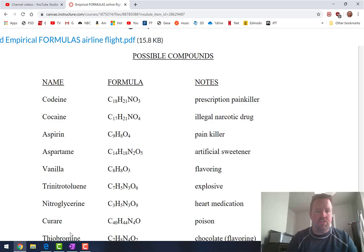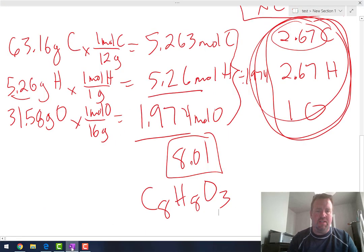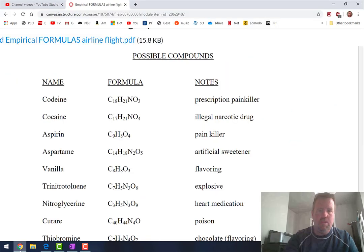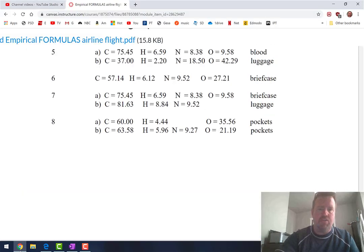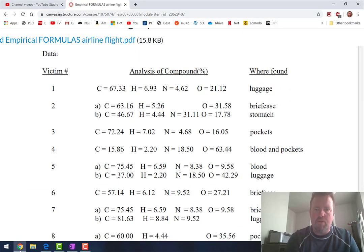Now, this person also, if you remember correctly, also had something else. This person had two things they found on them. So victim number two, that person had vanilla flavoring in their briefcase, but they also had letter B, something else in their stomach. So once you know both of those things, it should be pretty obvious who every single victim is. And then at the end, you should have a good idea who every single victim is, and that should get you to the end of the assignment.